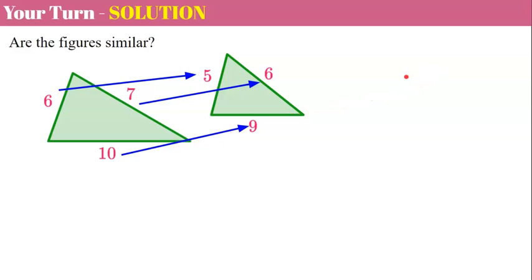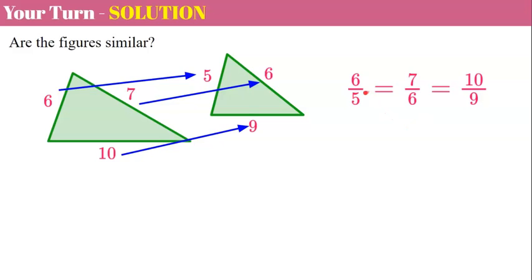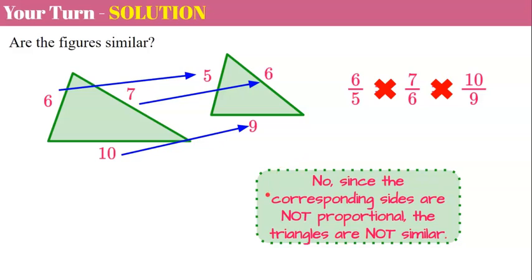Let's form our three ratios: 6 to 5, 7 to 6, and 10 to 9. These are already in simplest form and they are not equal to each other. We can check for proportionality — 6 times 6 is 36 and 5 times 7 is 35, so they are not proportional. As soon as one pair does not work, the triangles are not similar. Since the corresponding sides are not proportional, the triangles are not similar.